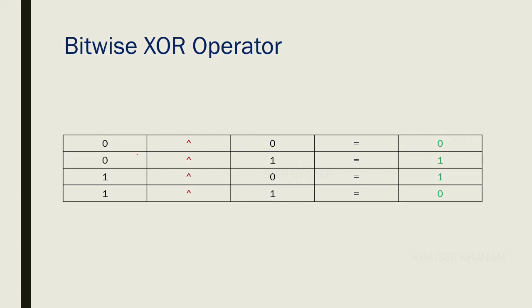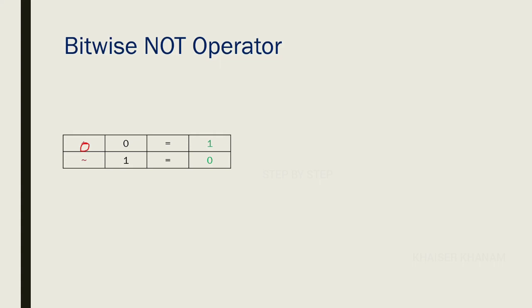For the XOR operator: 0 XOR 0 gives 0, 1 XOR 1 gives 0, but 0 XOR 1 gives 1 and 1 XOR 0 gives 1. So for XOR, if both bits are the same (both 0 or both 1) we get 0, but if they are opposite (0 and 1 or 1 and 0) we get 1. This is the XOR operation. The NOT operator (~) simply reverses bits — 0 becomes 1 and 1 becomes 0.